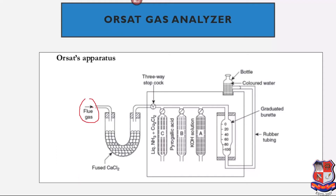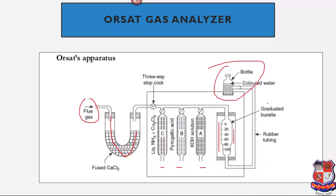The flue gases pass through a U-shape tube which contains the absorbents. The apparatus has three bulbs which are operated by valves, including a three-way stopcock valve. After passing through these tubes, the gas passes through a graduated burette which is surrounded by a water seal. Further, it is connected to a larger reservoir which continuously provides water flow — colored water — to the system.